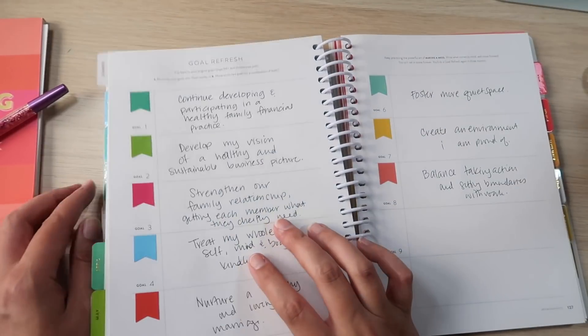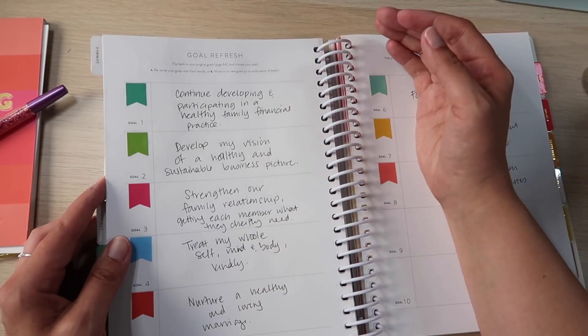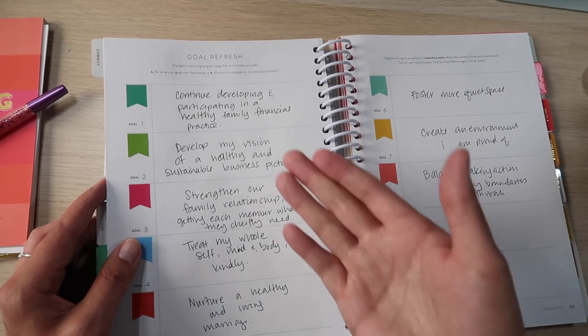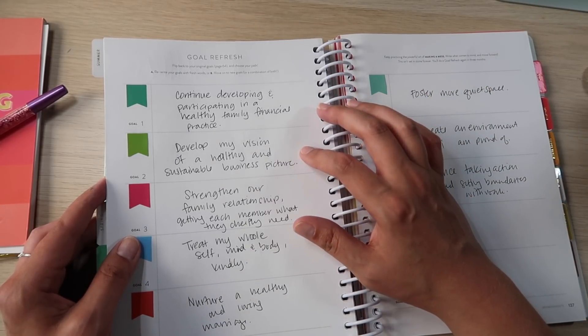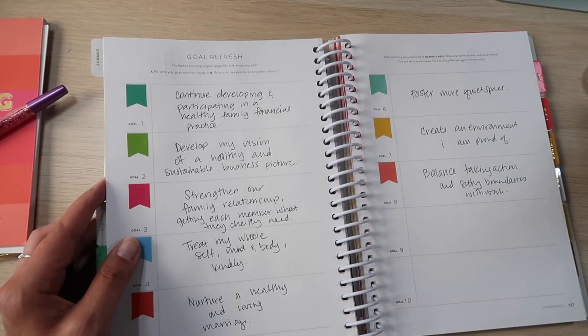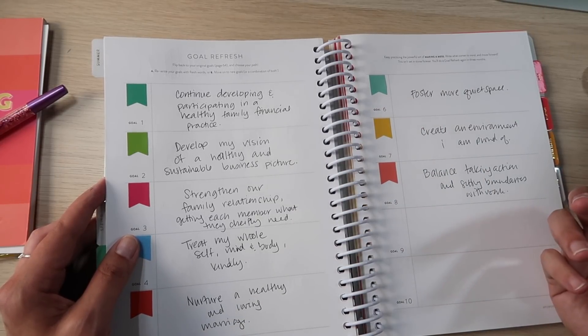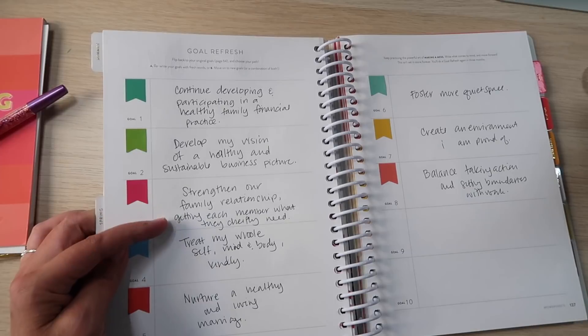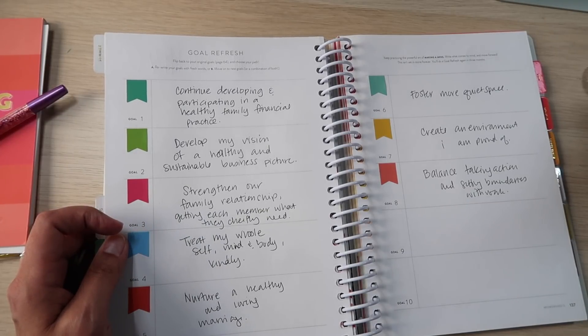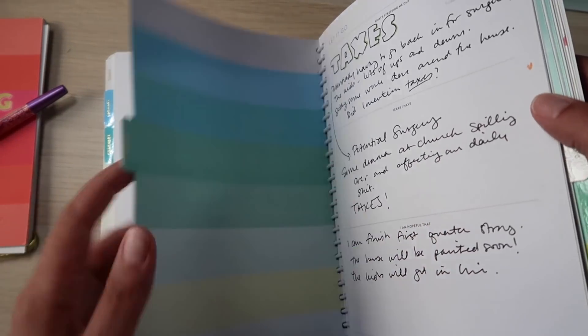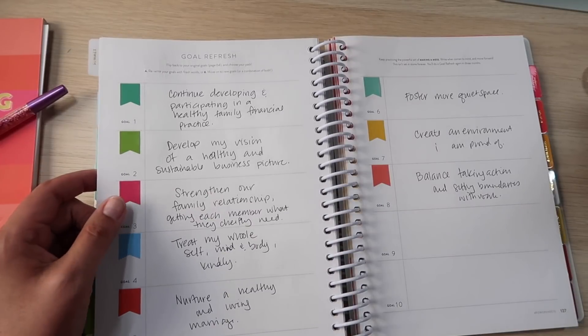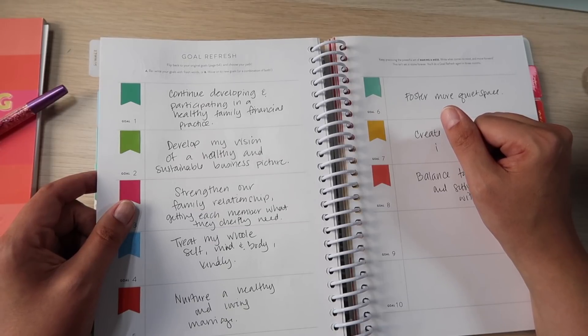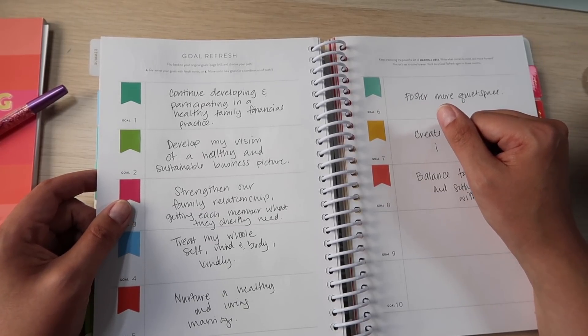So treat my whole self, mind and body kindly, nurture a healthy and loving marriage, foster more quiet space, create an environment I am proud of and balance taking action and setting boundaries with work. None of those changed. Those are all doing well, but I don't think there's anything in them that needs adapting. These other ones, though, I did make a few changes. Continue developing and participating in a healthy family financial practice. I basically, before it said develop and be part of or whatever, and now we're working on it. So we're just going to continue working on it. Same with this one. Develop my vision of a healthy and sustainable business picture. I have already done the thinking and done some of the groundwork and actually made some progress. So now instead of trying to think of it, I need to actually start acting on it. Strengthen our family relationship, giving each member what they chiefly need. That is actually the adaptation from where it said before, strengthen our family relationship, building support for each of us. What I realized after this last couple of months and how rough things have been is not that we all need support, but we all need different support. And that's the thing we're going to work on identifying in the next quarter.